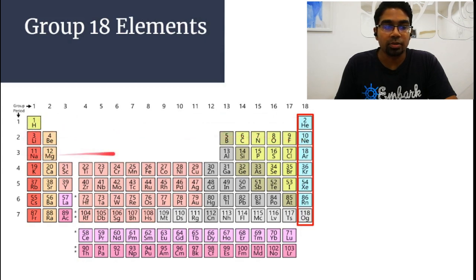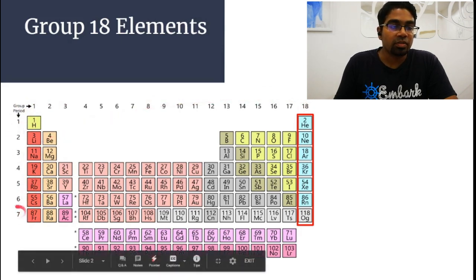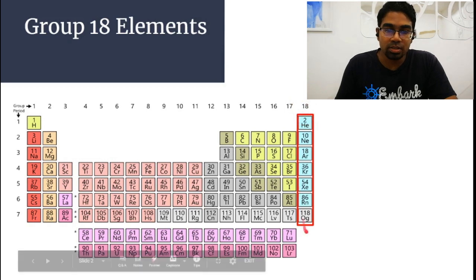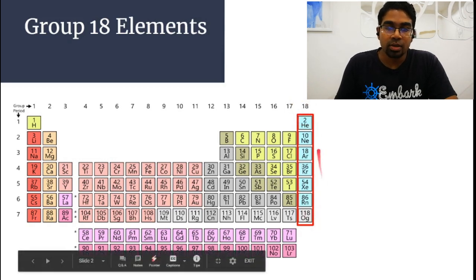Also remember what groups and periods mean. The groups are the vertical columns, so there are a total of 18 groups in the periodic table. There are a total of seven periods, which are the horizontal rows. Now Group 18 is the last group, so Group 18 elements are all the elements in this group right here.